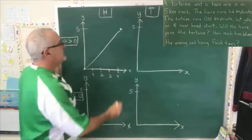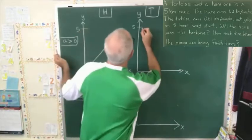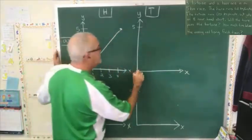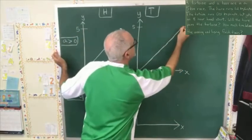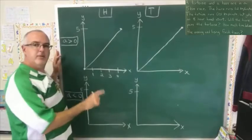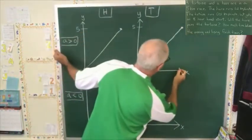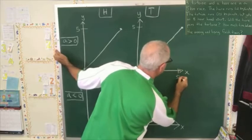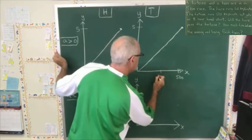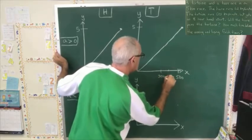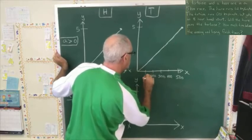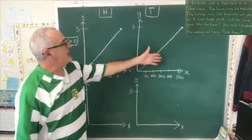Now we do the same thing with the tortoise. It's going to look the same, because the tortoise also starts with zero kilometers at time zero, and has to get to the finish line. But it takes the tortoise 500 minutes to do that. So, I have to scale my axes very different.